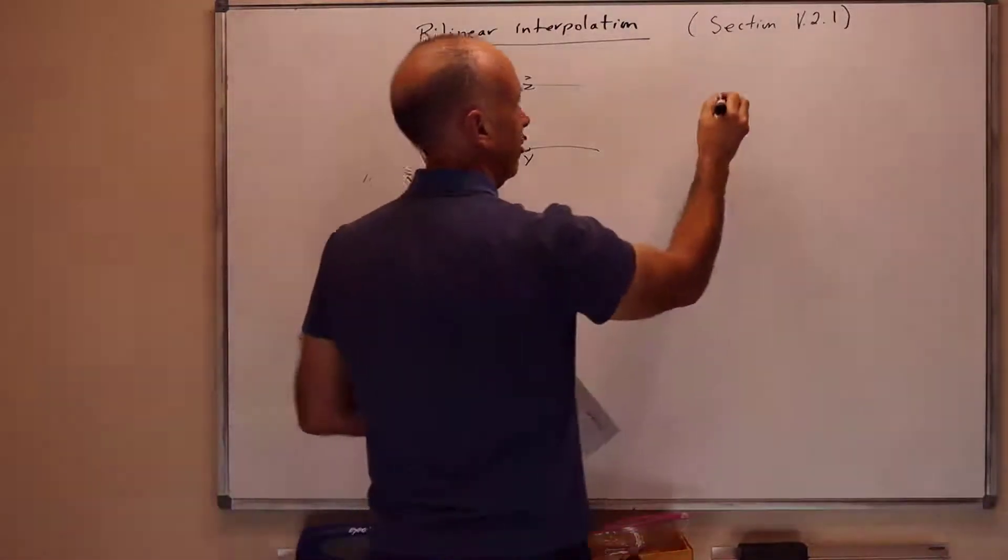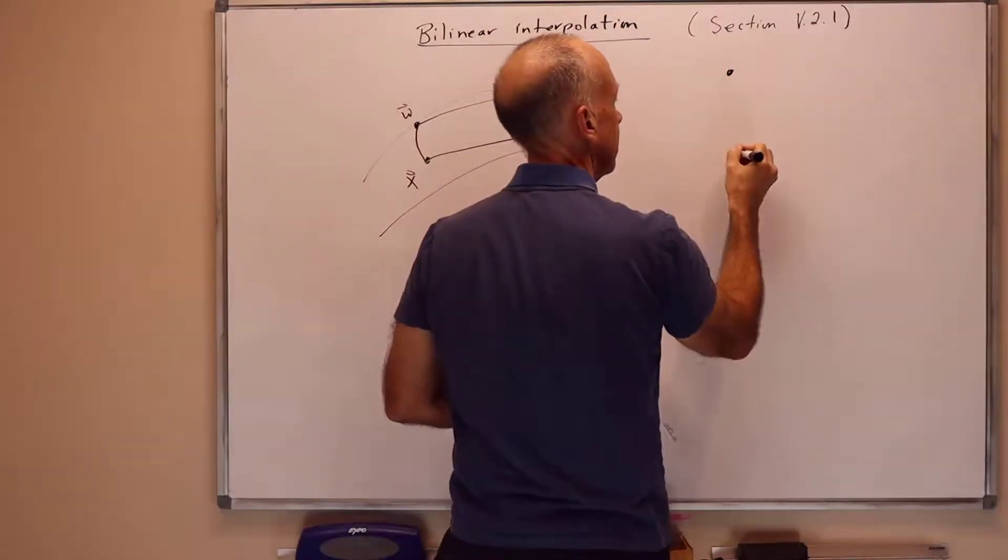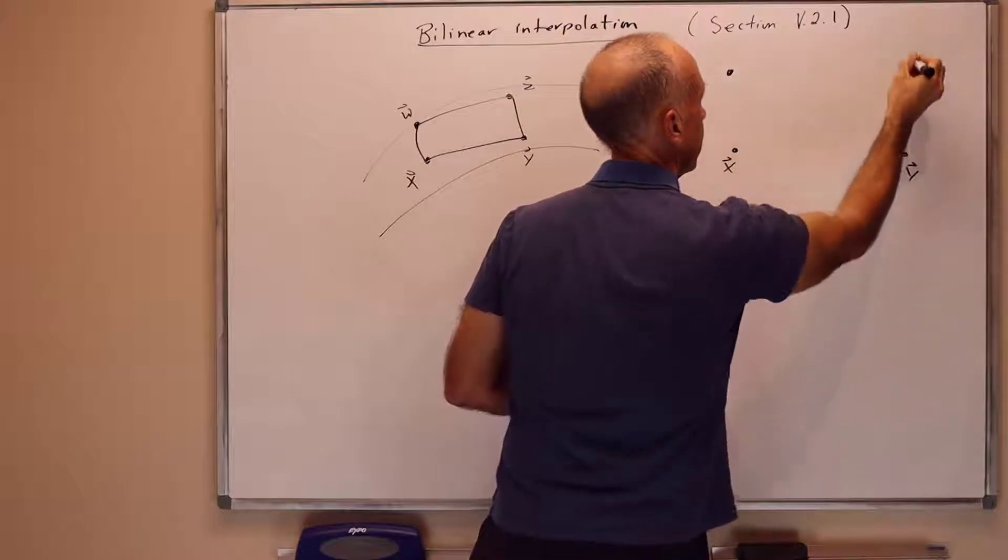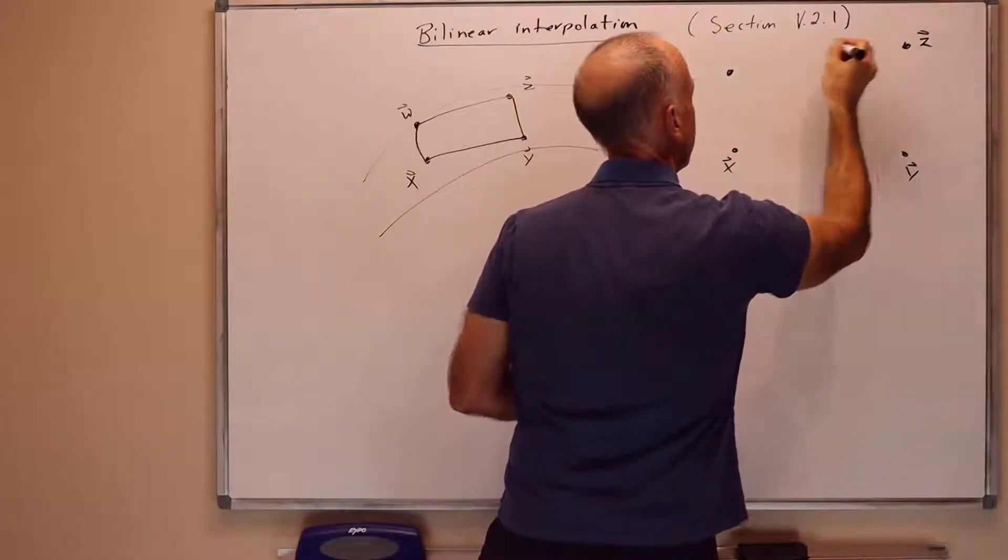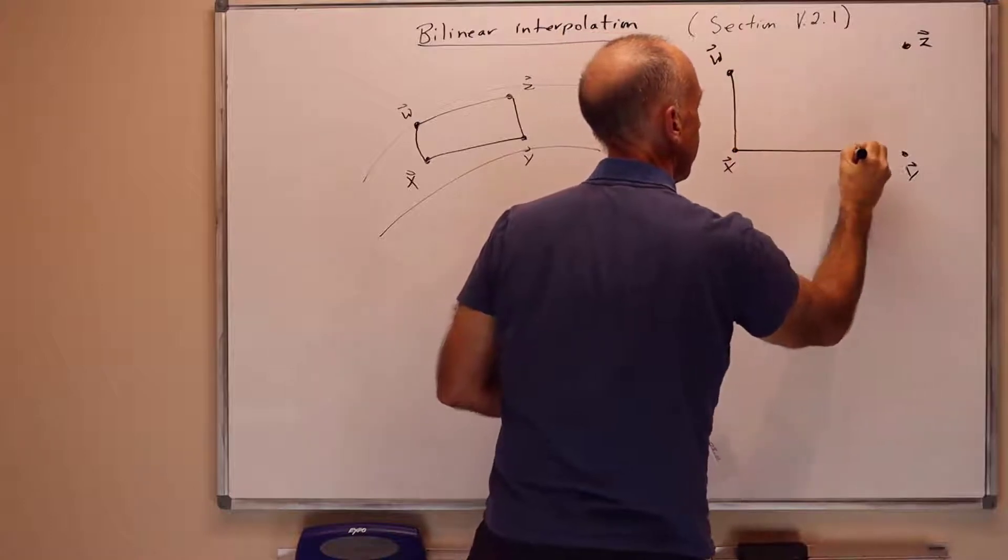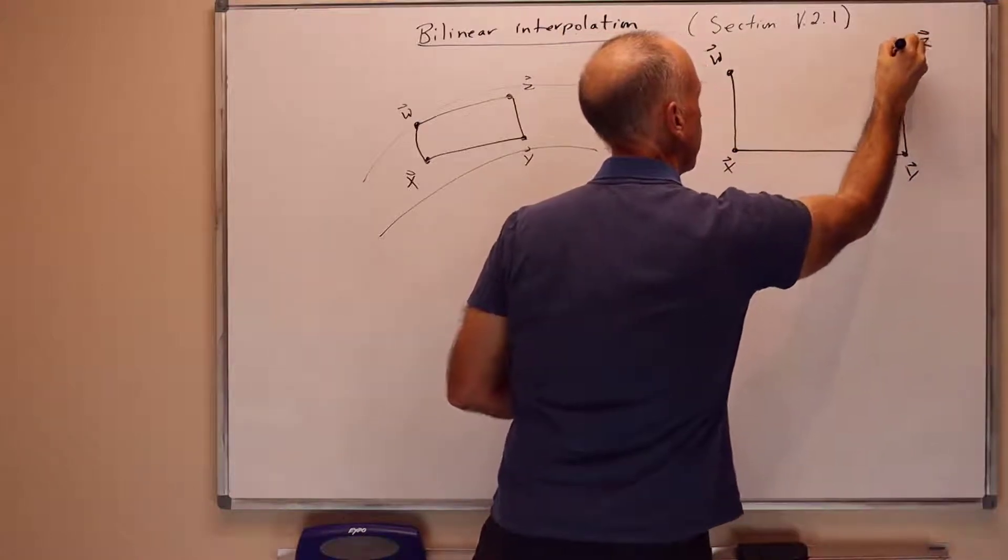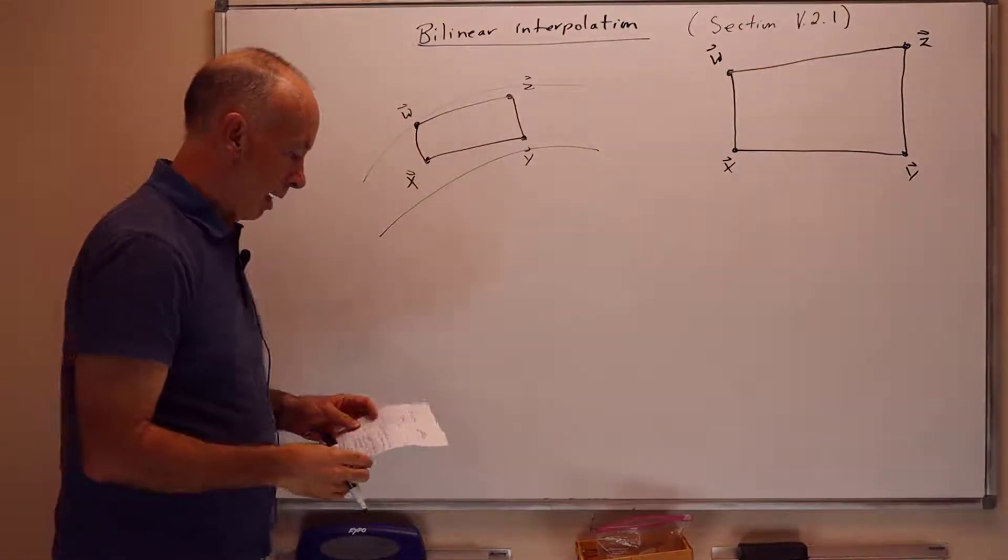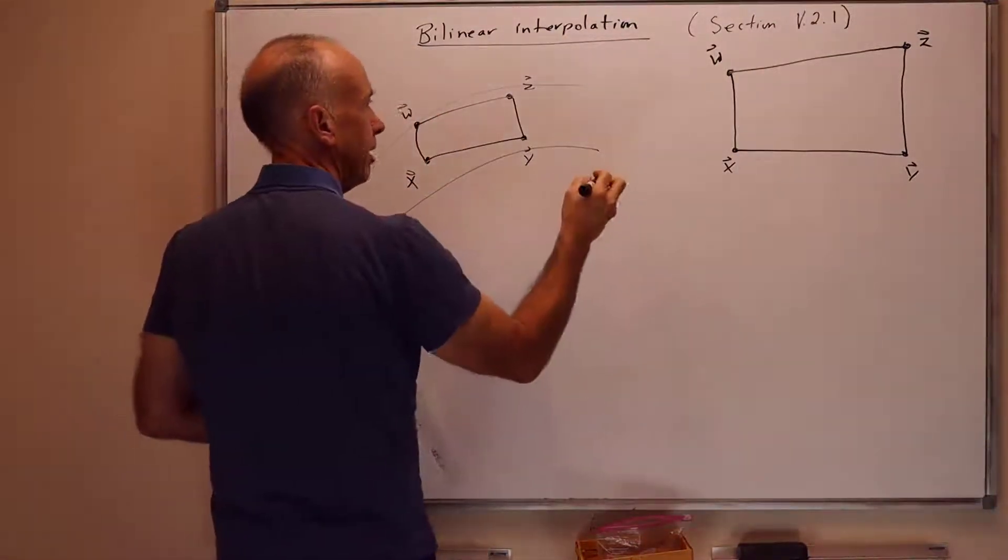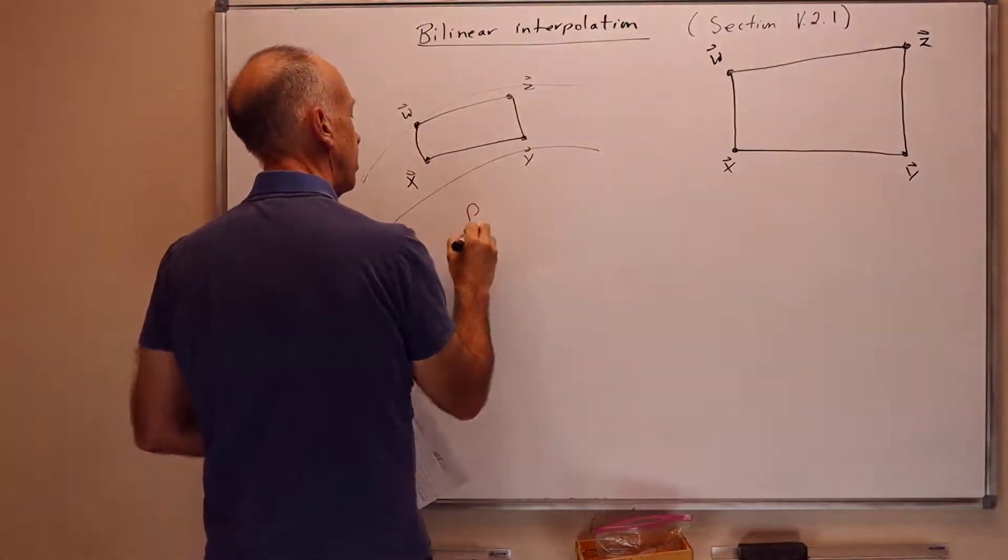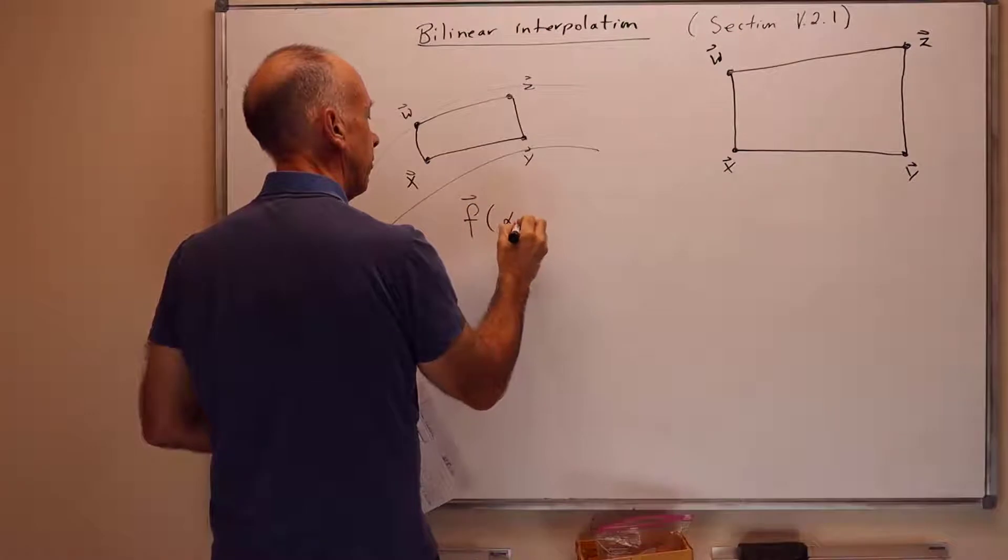So let me draw another picture of this. So I've got points x, y, z, and w, which we'll join by straight lines. So these are the straight line segments joining the four vertices. And we're going to approximate a point in the middle of this surface by a function f of alpha beta.